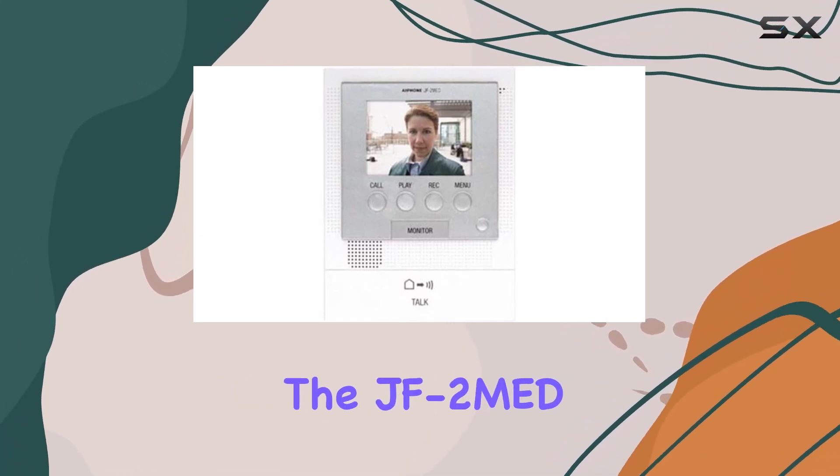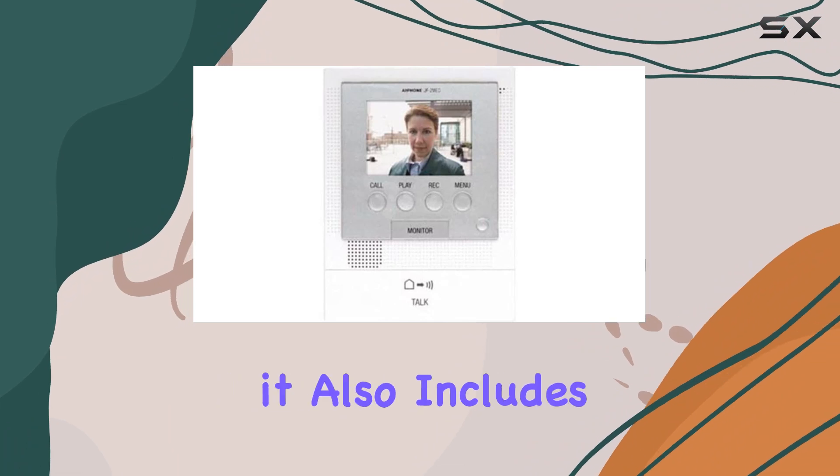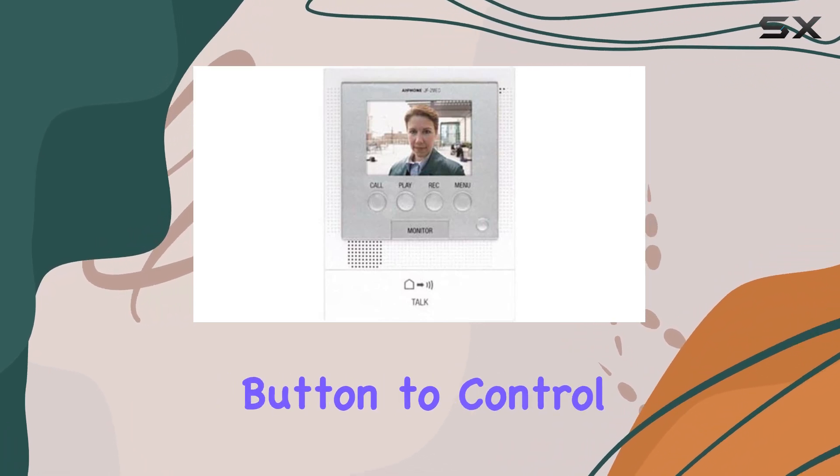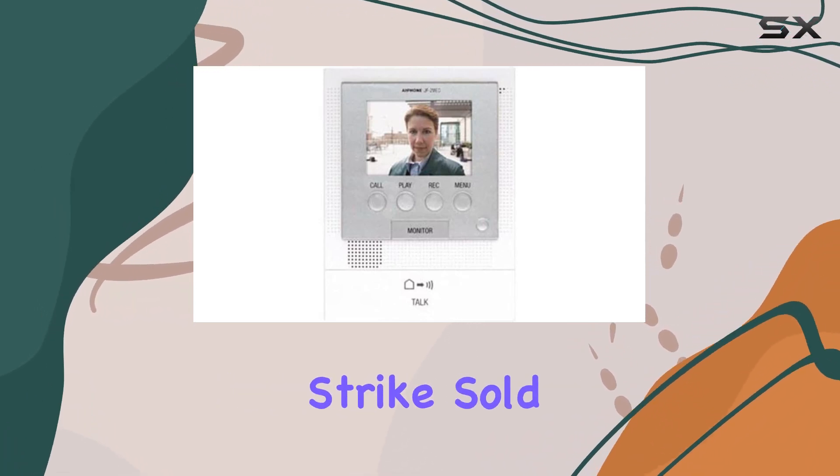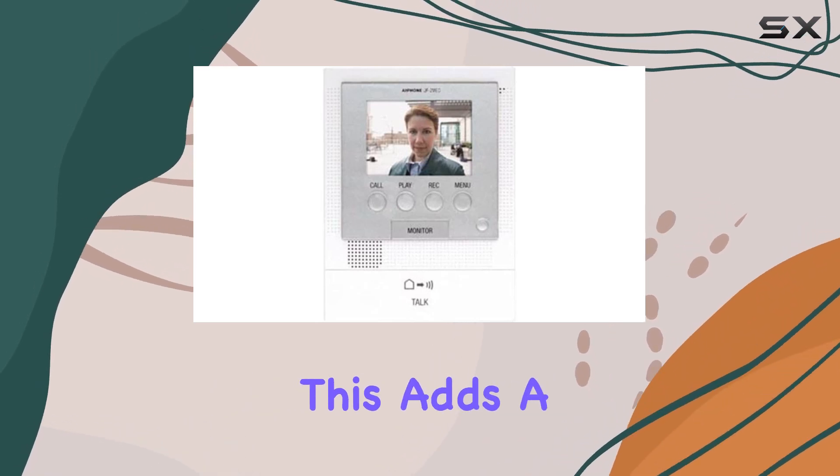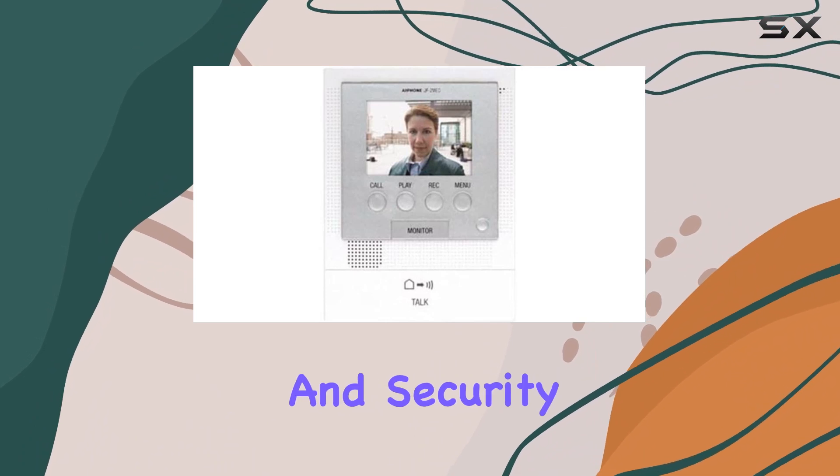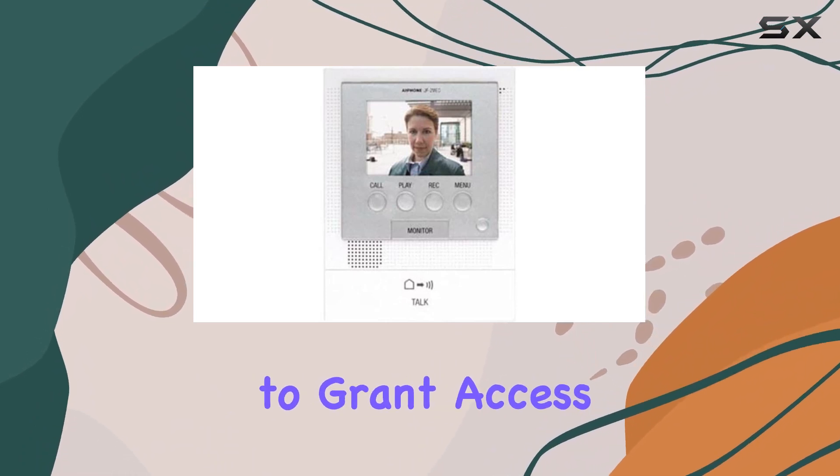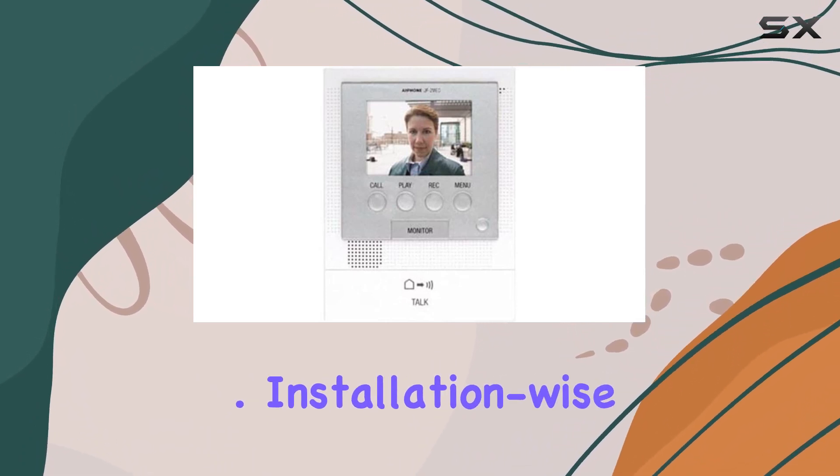Moreover, the JF 2MED isn't just about communication. It also includes a door release button to control an electric strike (sold separately), enabling remote unlocking of the entrance. This adds a layer of convenience and security, allowing you to grant access from the comfort of your home.